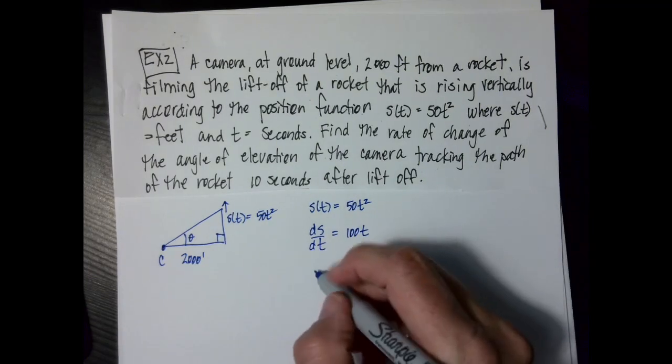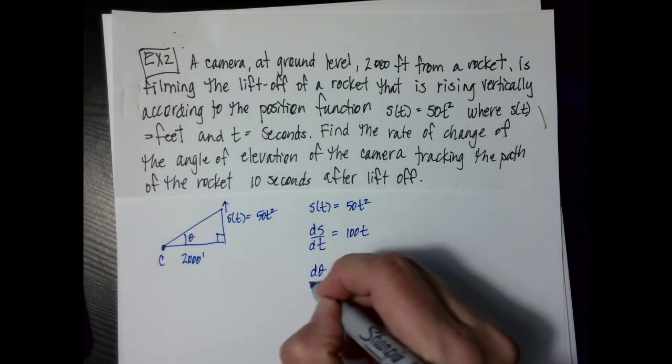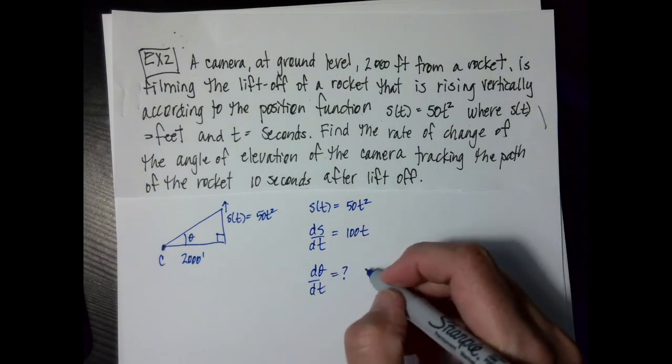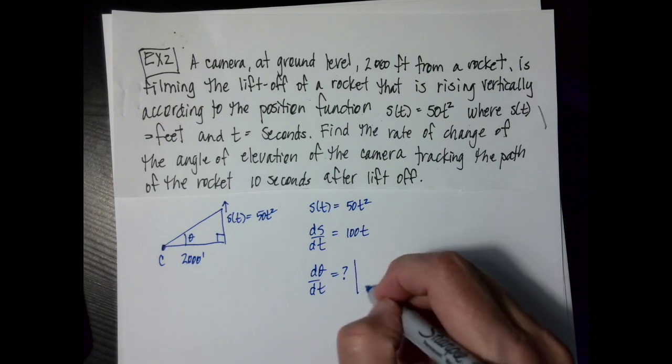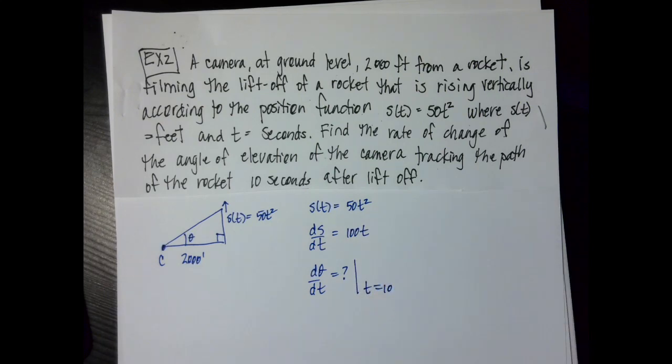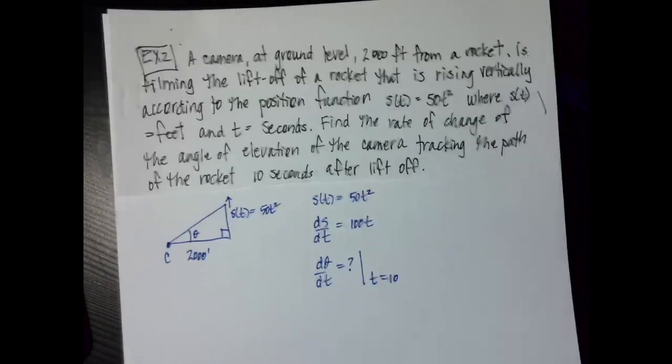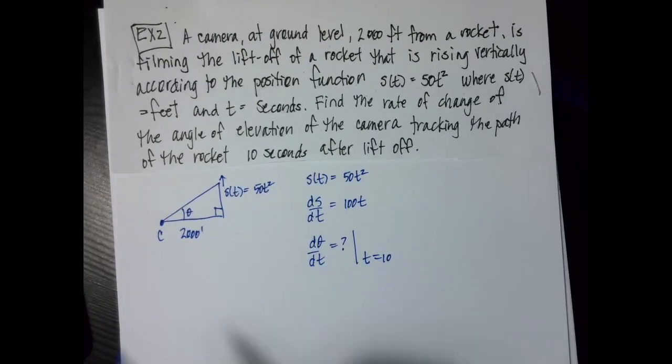I know that if I take the derivative of that, ds over dt is going to equal 100 t. And then I know that d theta over dt is what I'm looking for, and I want to know what happens when time is equal to 10.